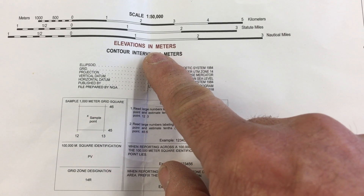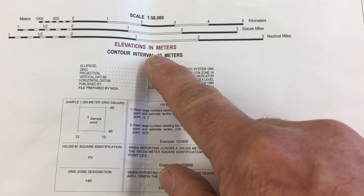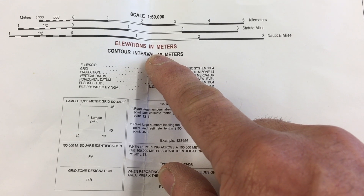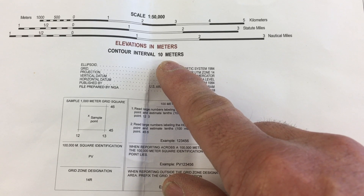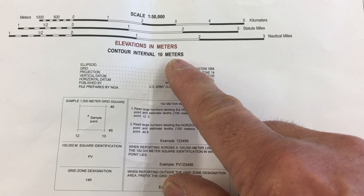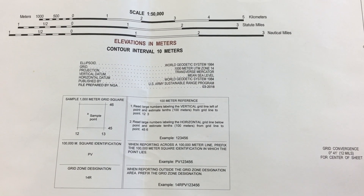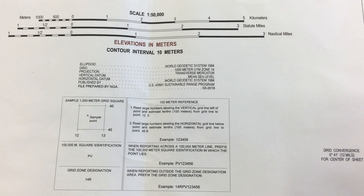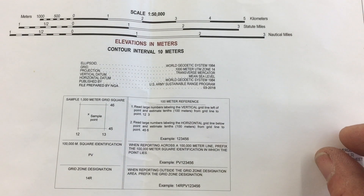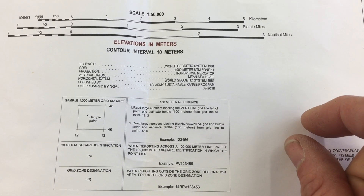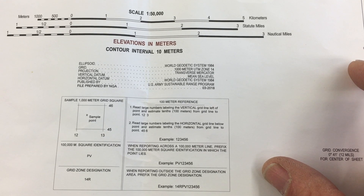Directly underneath the scale, we see that the contour interval is 10 meters and all elevations are in meters. Most maps use the metric system. The contour interval is hugely important — you need to know what it is. Ten meters is roughly 30 feet. The contour interval is the difference in elevation change between two contour lines. The closer the lines are together, the steeper the slope; the further apart, the more gentle and even the slope.